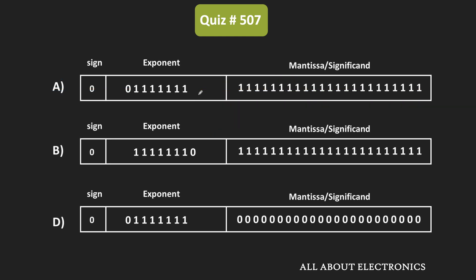Out of the remaining three options, option B has the largest exponent. The value of the exponent in option B is equal to 254, while for options A and D the exponent value is equal to 127. The larger the value of the exponent, the larger the number will be. So just by looking at the exponent, we can say that option B represents the largest number.